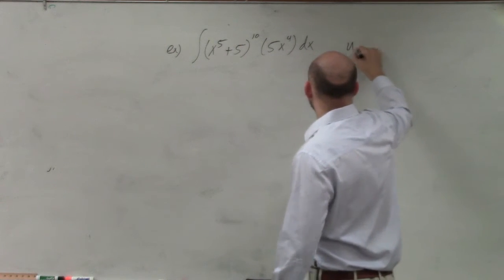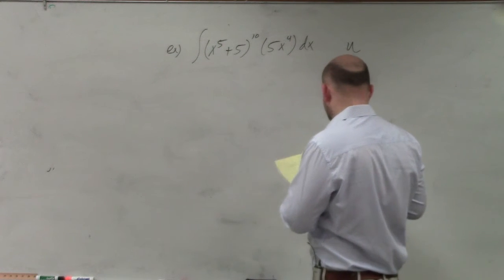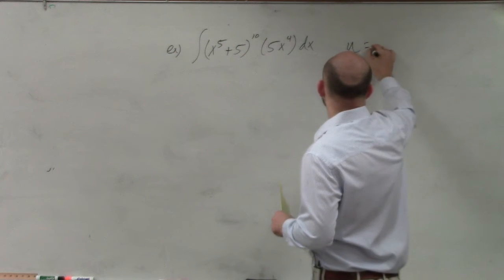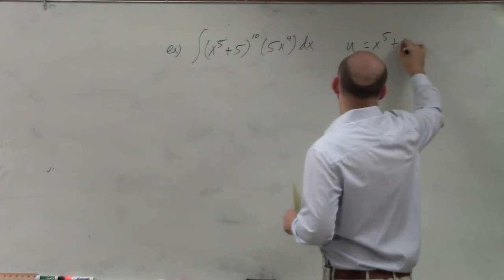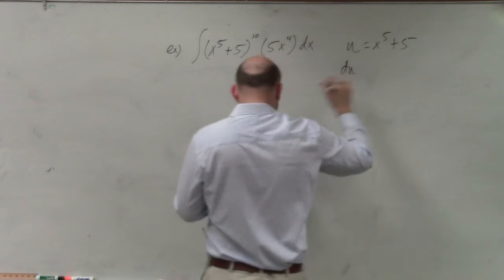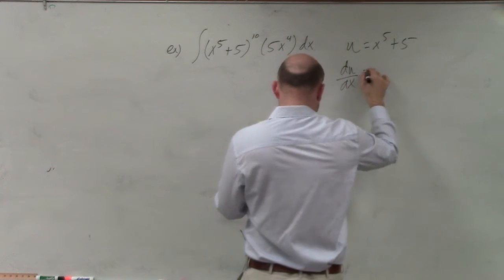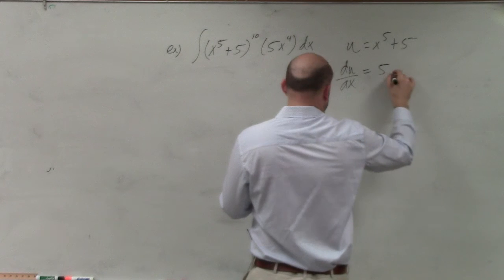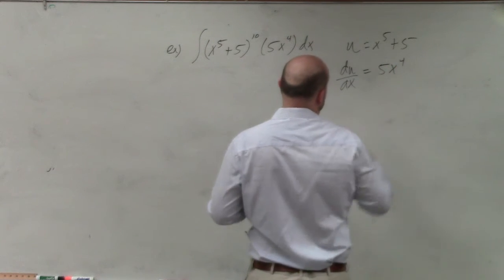So I'm just going to label everything out here again just so we have it. u equals x to the 5th plus 5. I'm going to take the derivative of that — du/dx — which is 5x to the 4th.